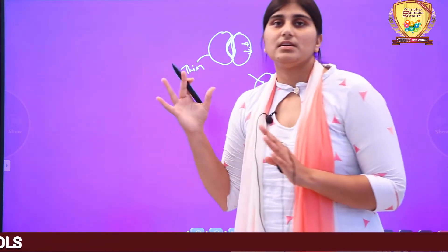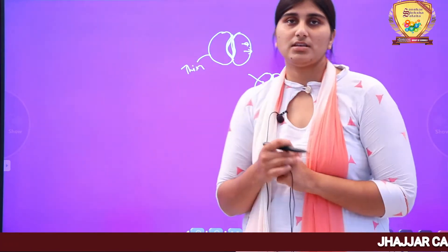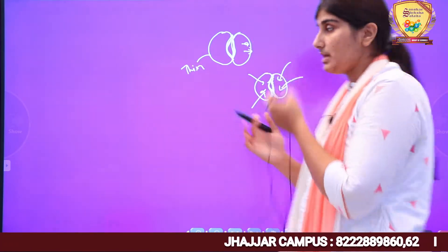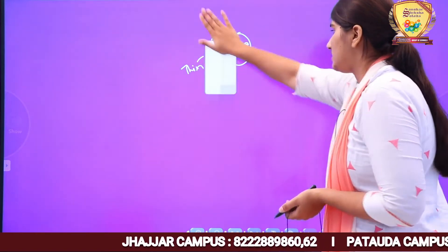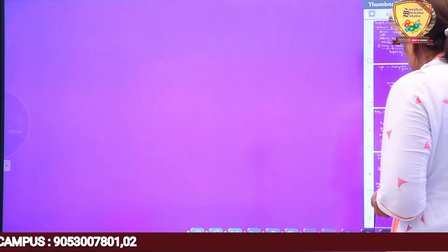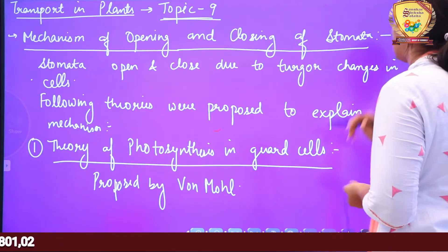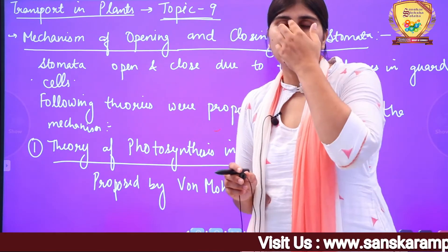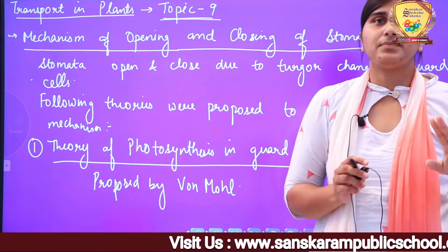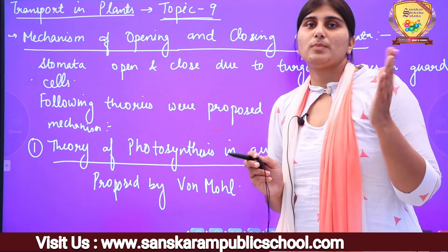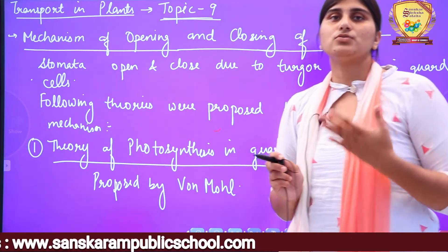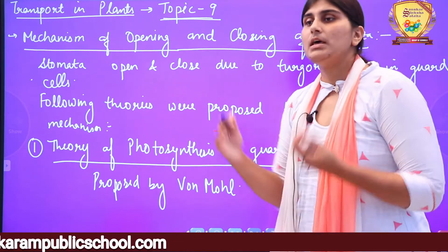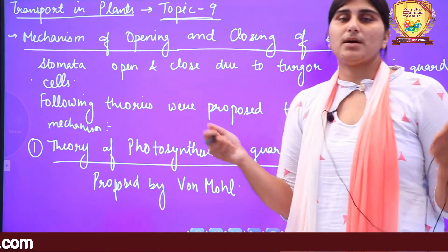Opening and closing होती है due to changes in the osmotic concentration — cell के अंदर water की entry या exit होती है। जो cell के अंदर osmotic conditions हैं, वो change होती हैं, तब जाके stomata की opening and closing होती है। Turgor pressure वो pressure है जो protoplasm cell wall पर लगाता है। जितना ज़्यादा cell के अंदर पानी होगा, उतना ज़्यादा pressure बाहर की तरफ लगेगा।